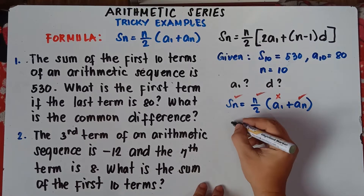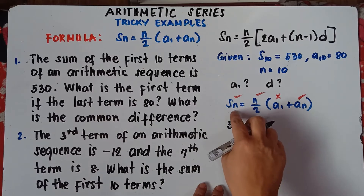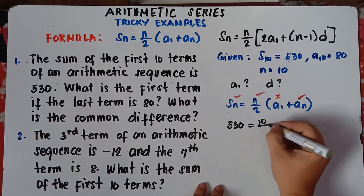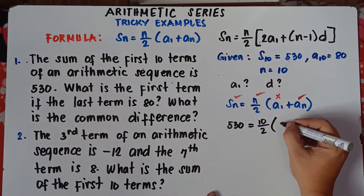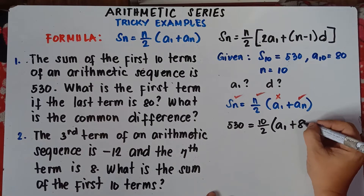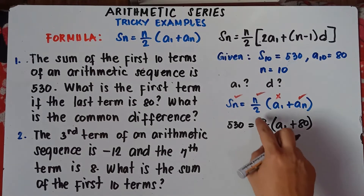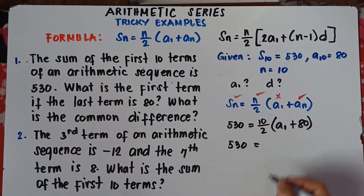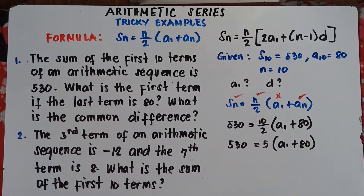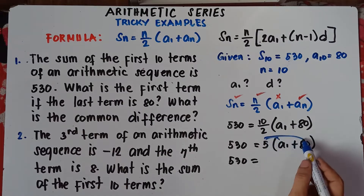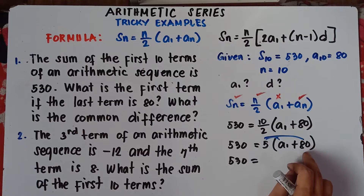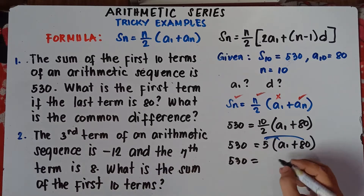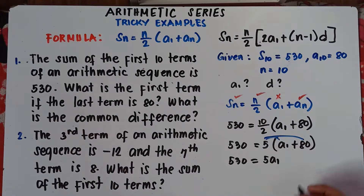Substituting: S of 10 equals 530, n is 10 divided by 2, quantity a sub 1 plus 80. Simplify: 530 equals 5 times the quantity a sub 1 plus 80. Distribute: 530 equals 5 times a sub 1 plus 5 times 80. Note: you cannot add 80 and the first term because 80 has no variable. So 530 equals 5 a sub 1 plus 400.